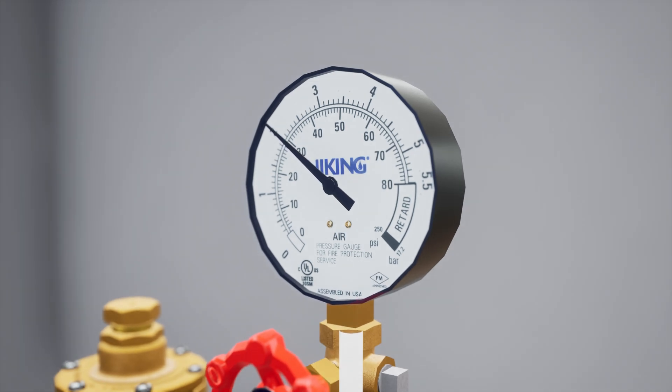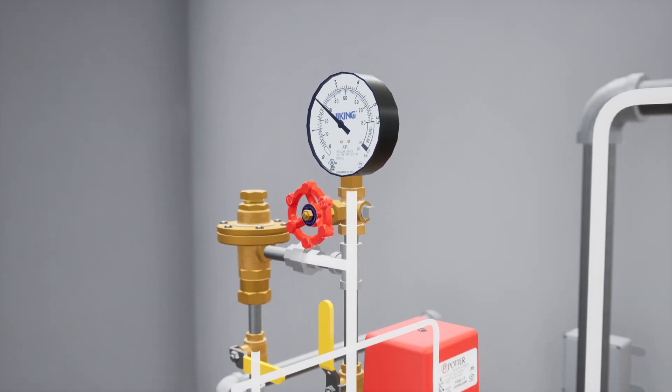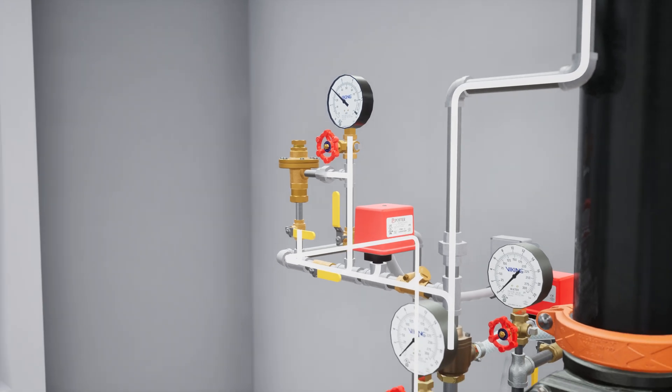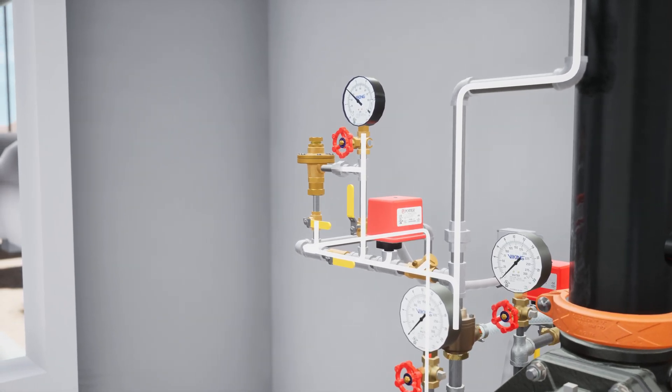Once the release line air pressure is within 5 psi of your target air pressure, close the air bypass valve and open the ball valve below the air maintenance device to finish filling the dry pilot line.